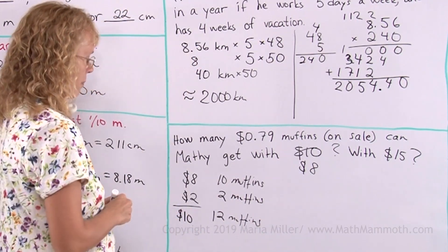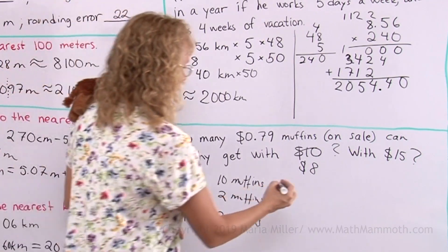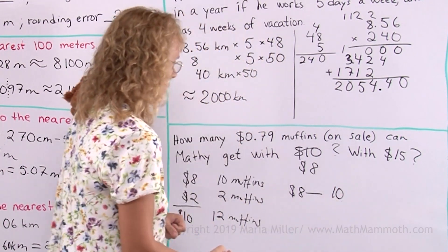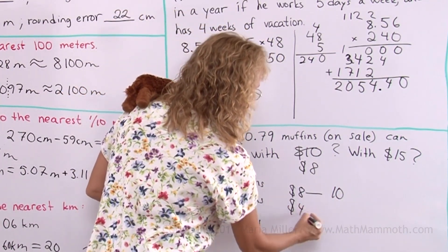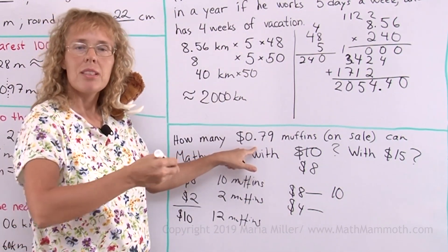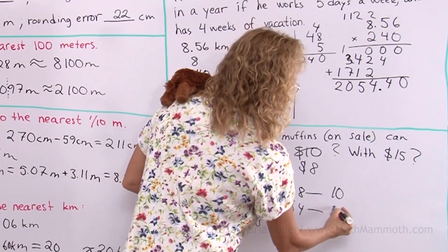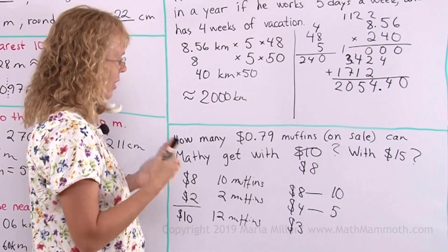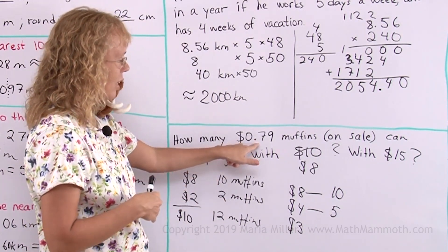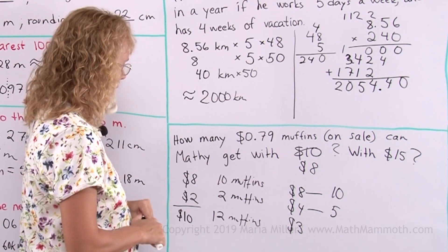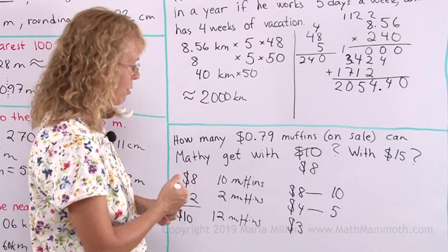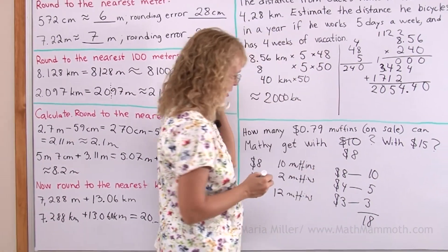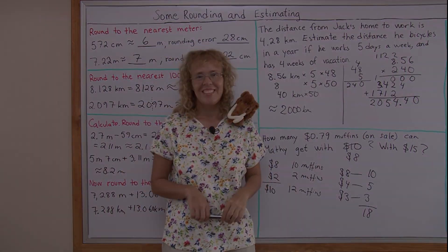Now how about with 15 dollars? Maybe I'll use my 8 dollars again. 8 dollars means 10 muffins. Now, how about another easy number, 4 dollars. 80 cents times exactly 5 will be 4 dollars. So 5 more. And then this is 12 dollars. 3 dollars more. 4 times 80 cents would be 3 dollars 20, and 3 times 80 cents is 2.40. So 3 more. So in total, 18 muffins. Is that going to fill you up? I thought so too.